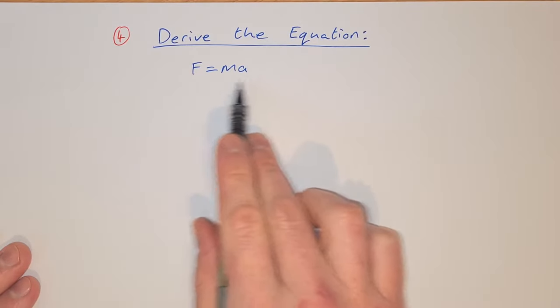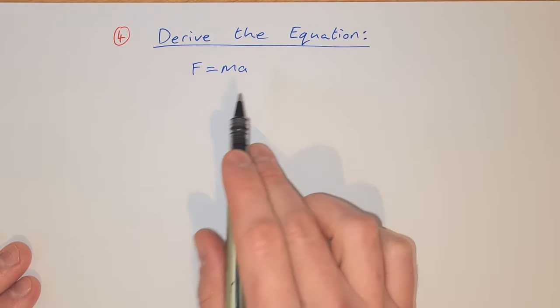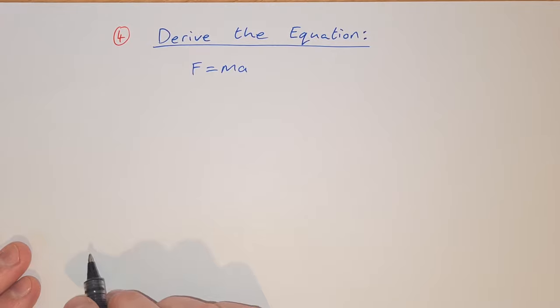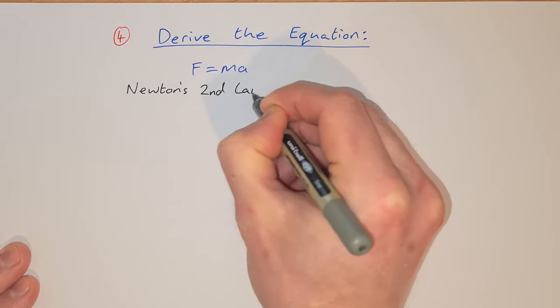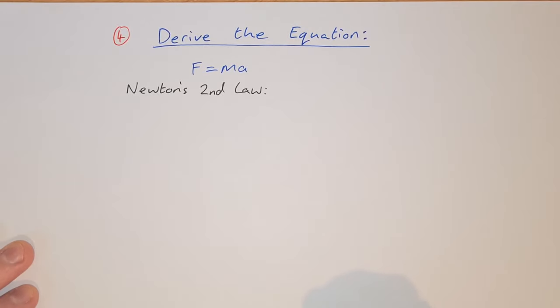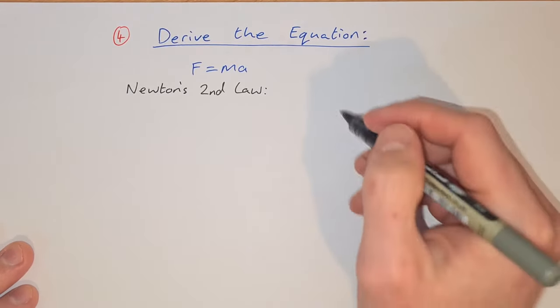We're asked to derive the equation f equals ma. To start, we use Newton's second law, which tells us that force is proportional to the rate of change of momentum.